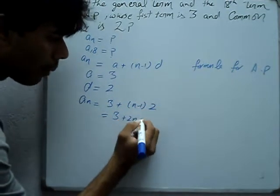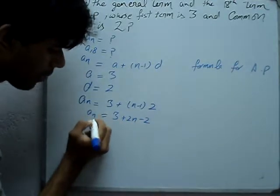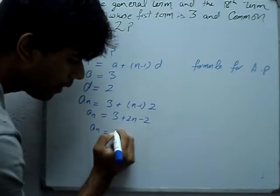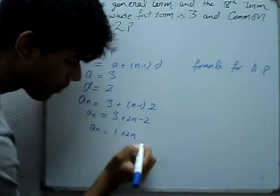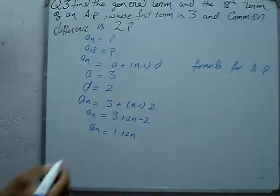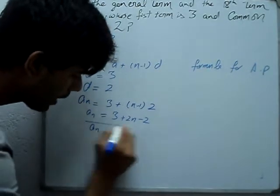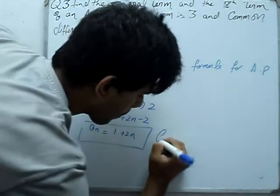Simplifying: AN equals 1 plus 2n, which equals 2n plus 1. The general term is 2n plus 1.